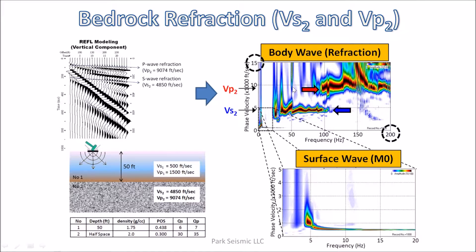This is the same modeling multi-channel seismic record previously displayed, but this dispersion image shows much broader ranges in frequency and phase velocity — with the highest frequency of 200 Hz and the highest phase velocity of 15,000 feet per second — whereas the normal surface wave ranges are usually less than a few tens of hertz and several thousand feet per second.